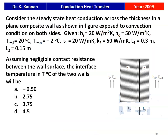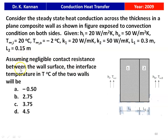The first problem is from the 2009 question paper. Consider the steady state heat conduction across the thickness in a plane composite wall, exposed to convection conditions on both sides. Given: H_i = 20 W/m²K, H_o = 50 W/m²K, T∞_i = 20°C, T∞_o = −2°C, K₁ = 20 W/mK, K₂ = 50 W/mK, L₁ = 0.3 m, L₂ = 0.15 m. Assuming negligible contact resistance, the interface temperature T of the two walls will be: options are −0.5, 2.75, 3.75, or 4.5 degree Celsius.